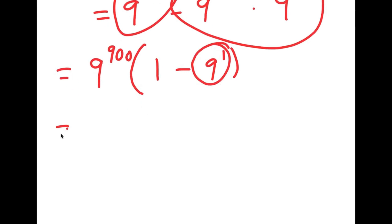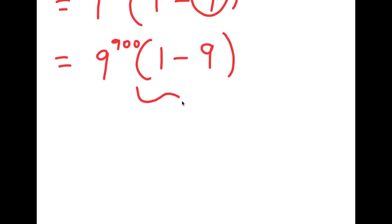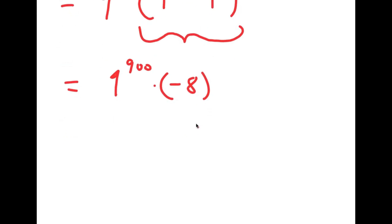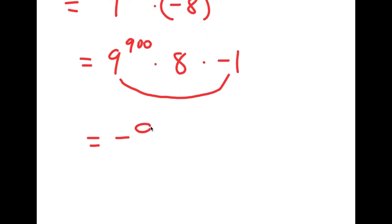And 9 to the power of 1 is the same thing as 9, so I get 9 to the power of 900 times 1 minus 9. From here I simplify what's in my parentheses: 1 minus 9 is negative 8, so I have 9 to the power of 900 times negative 8. I can rewrite negative 8 as 8 times negative 1, and multiply negative 1 with 9 to the power of 900, so I get negative 9 to the power of 900 times 8.